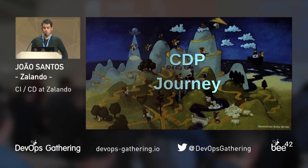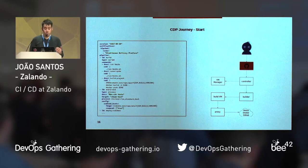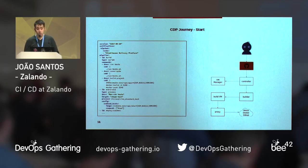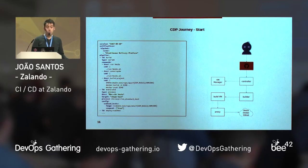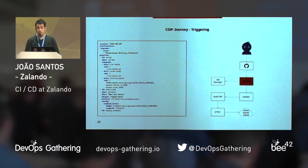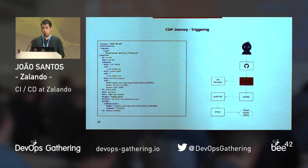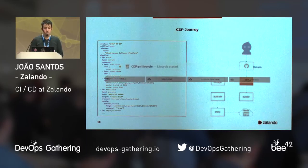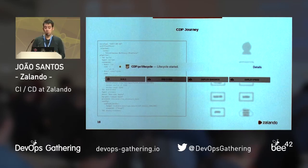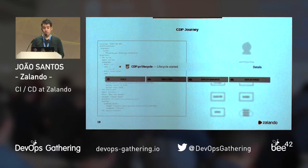Now we're going to embark on the journey of a typical continuous deployment pipeline with CDP. Builds and deployments are configured using a single YAML file, not unlike Travis for example. This file is the only configuration users have to do to use CDP — everything else works automatically. When the user creates a pull request or pushes to an open pull request or protected branch, a pipeline starts. CDP exposes status on GitHub and integrates with our developer console to provide information to users, and also supports HipChat notifications for relevant events.